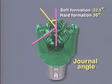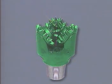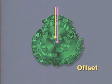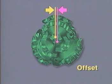In general, soft formation bits have smaller journal angles than hard formation bits. Offset is the horizontal distance between the center line of the bit and a vertical plane through the center line of the journal. This offset is measured as a displacement in the positive direction of rotation.